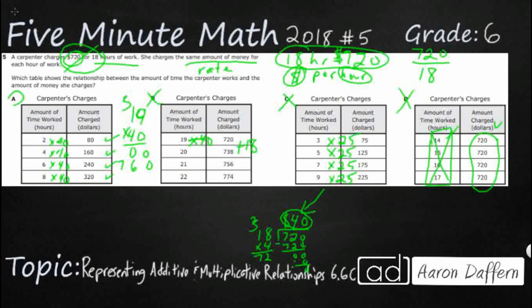So our answer is A because it shows us that multiplicative relationship of times 40 because that is her rate per hour.